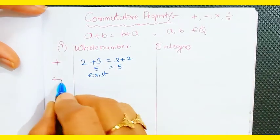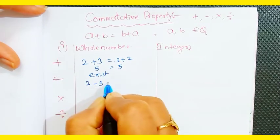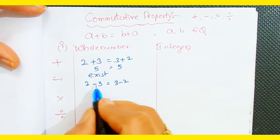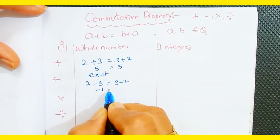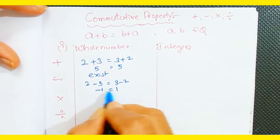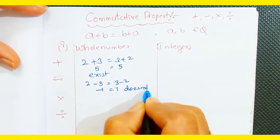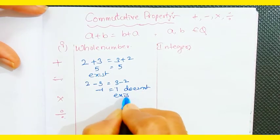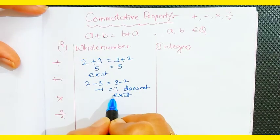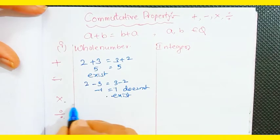For subtraction: suppose 2 - 3 = 3 - 2. We get -1 on the left and 1 on the right — both are not equal. So the commutative property does not exist for whole numbers under subtraction, meaning it does not satisfy the commutative property.